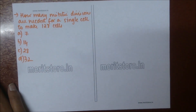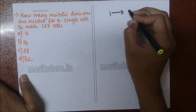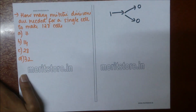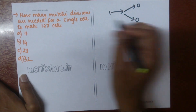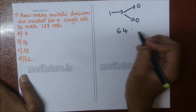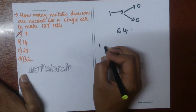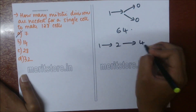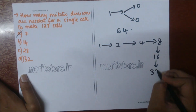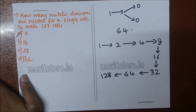How many mitotic divisions are needed for a single cell to make 128 cells? One cell divides to form two cells in a mitotic division. The sequence is: 1 → 2 → 4 → 8 → 16 → 32 → 64 → 128. So there are a total of seven divisions.